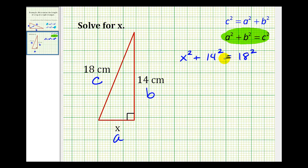Now let's simplify and then solve. We have x² + 14², which is 196, equals 18², which is 324.